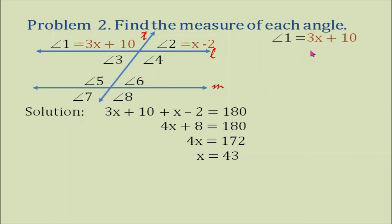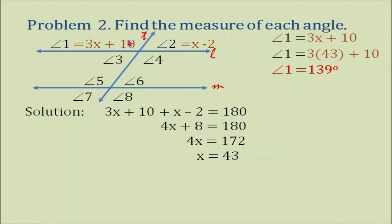Now let's substitute x = 43. Angle 1 equals 3 times 43 plus 10, which equals 139 degrees. The other angles that also measure 139 degrees are angle 4 (vertical angles), angle 5 (corresponding angles with angle 1), and angle 8 (alternate exterior angles with angle 1).